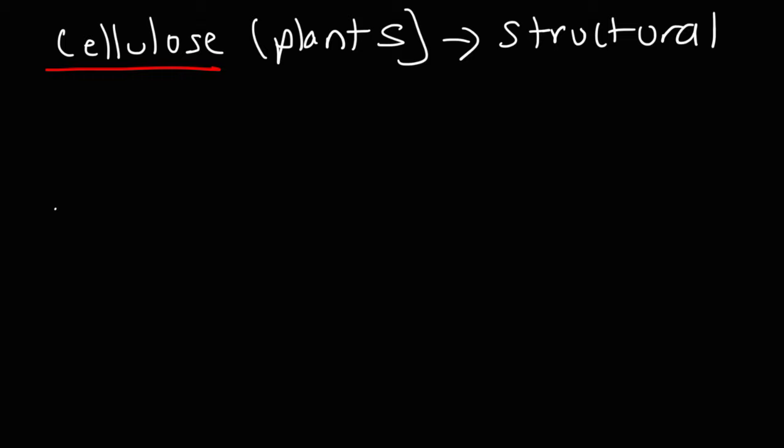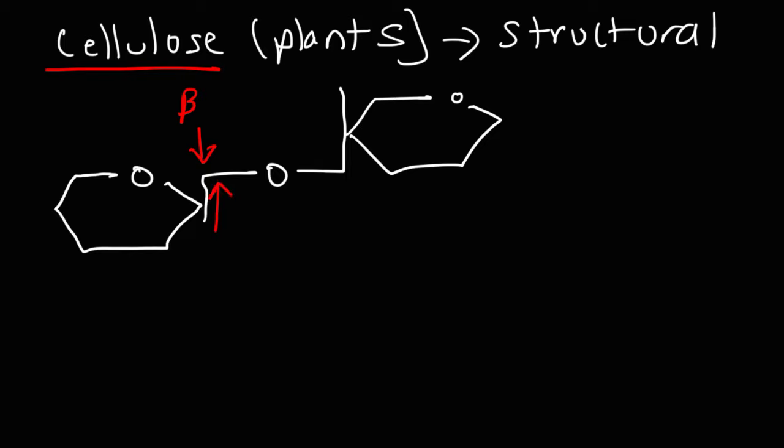Now let's talk about the bonding that's found in cellulose. As we can see here, this is a beta bond since it's going up. And it's between carbons 1 and carbons 4 of the glucose monomers. So cellulose links up the glucose units by means of beta 1,4 glycosidic bonds. That's what you need to know regarding cellulose.